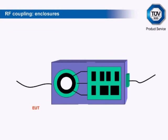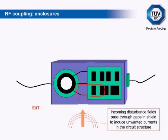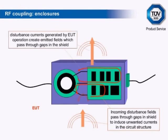The counterpart to coupling via cables is coupling via the product enclosure. Here the fields interact directly with the conducting structures inside the enclosure — wires, PCB tracks, and even the components themselves.